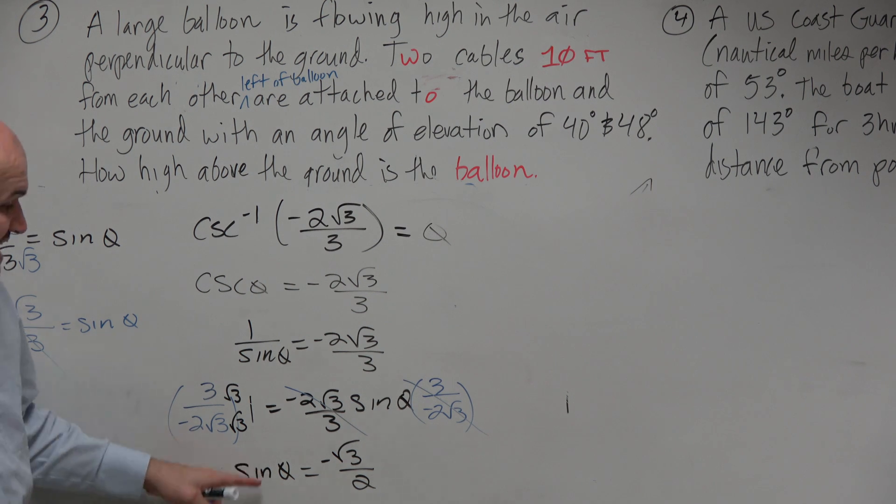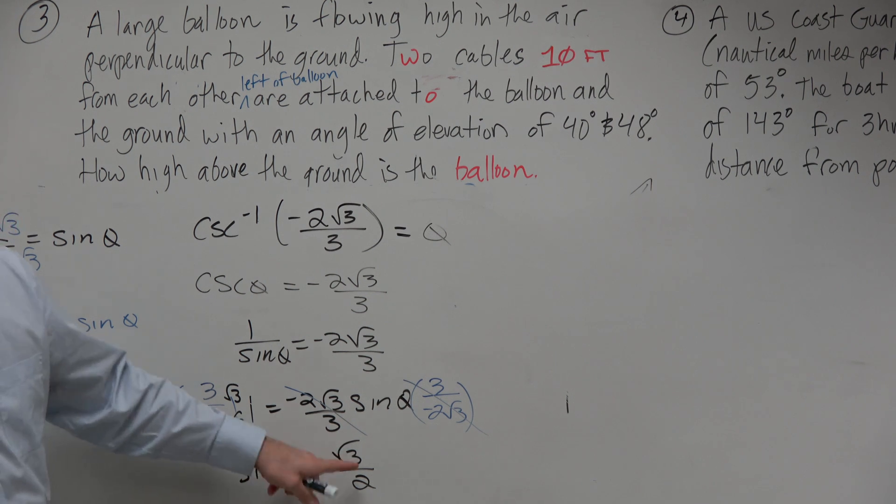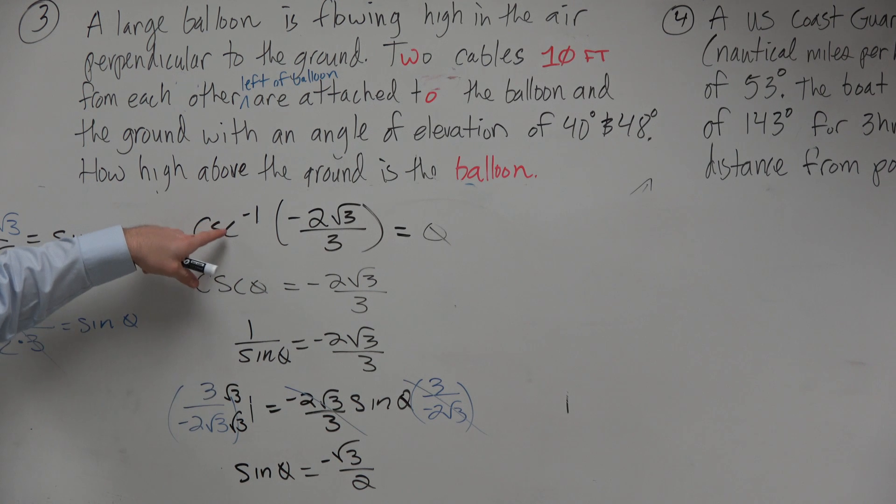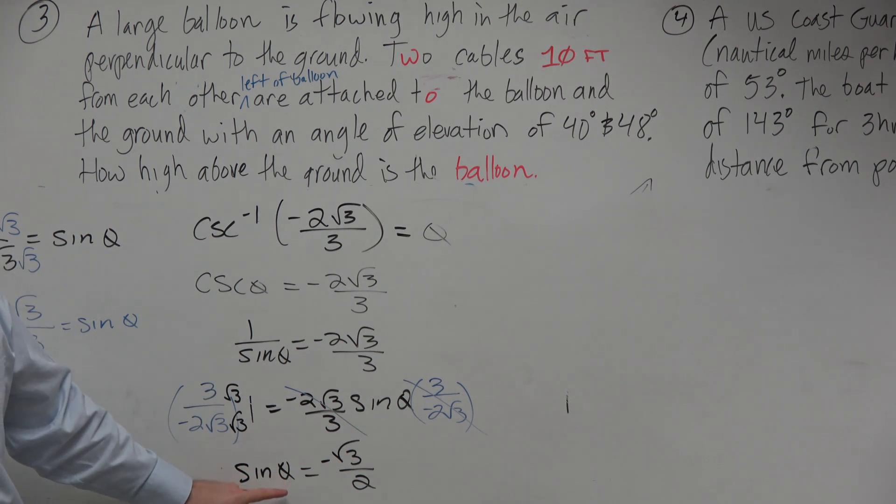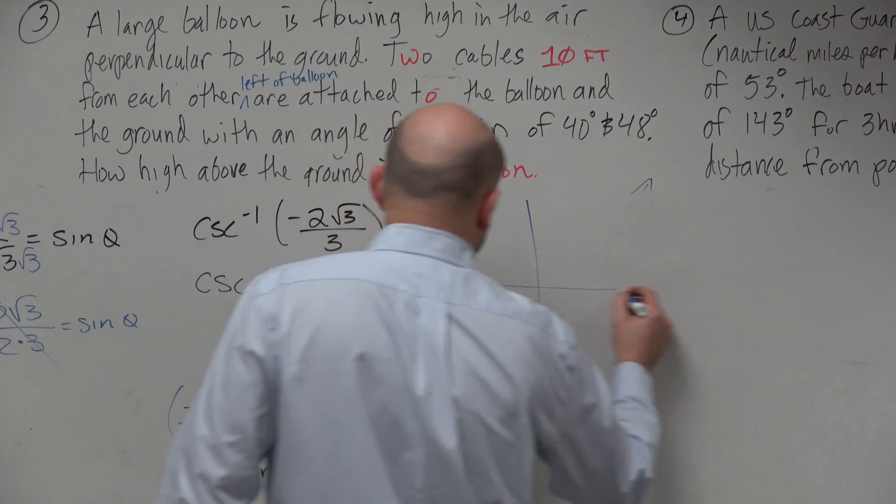So now we're looking for the sine of what angle gives me negative square root of 3 over 2, which is really the same question as up here. Same question, just in terms of sine. So if we go back to the knowledge of the unit circle,